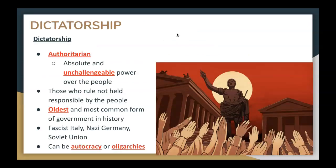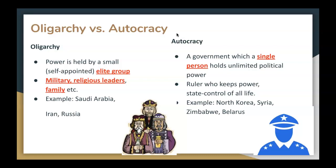Dictatorships. A dictatorship can be described as an authoritarian government where rulers have absolute and unchallengeable power over the people. Those who rule are not held responsible by the people — they can typically do whatever they want. Dictatorships are the oldest and most common form of government in history. Examples include fascist Italy, Nazi Germany, and the Soviet Union. Dictatorships can be autocratic or oligarchies. An oligarchy is where power is held by a small or self-appointed elite group of people — this could be a military, religious leaders, or even family members. Examples of oligarchies include Saudi Arabia, Iran, and Russia.